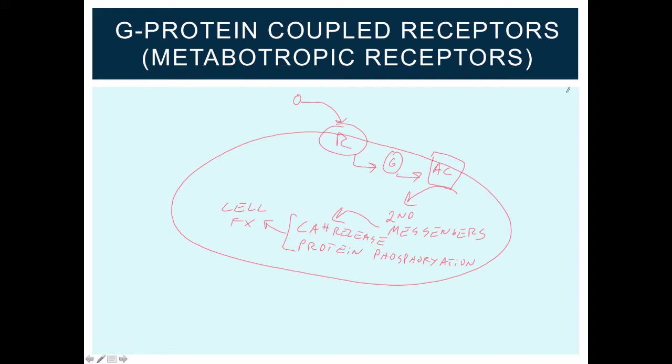G-protein coupled receptors can also directly activate and alter ion channels. So these are two different ways that G-protein coupled receptors can alter the activity of a cell. G-protein coupled receptors act on the order of seconds.